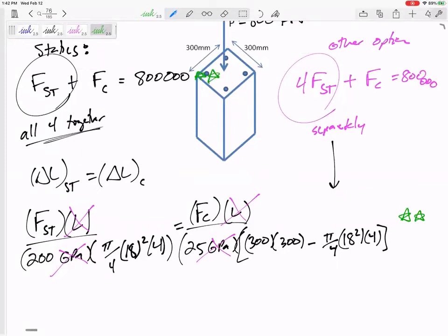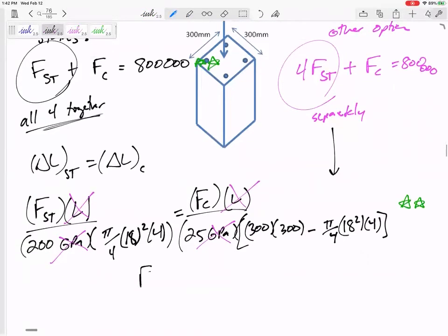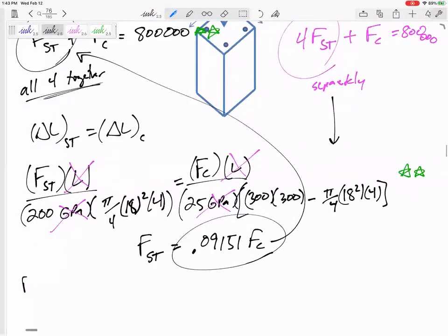And so now we've got two equations. Two equations, two unknowns. I'll do this math with you for a second. I would get F_ST is 0.09151 F_C. And then I would plug in that right there and get the force in the concrete is 732.9 kilonewtons. The force in the steel is 67.1 kilonewtons.